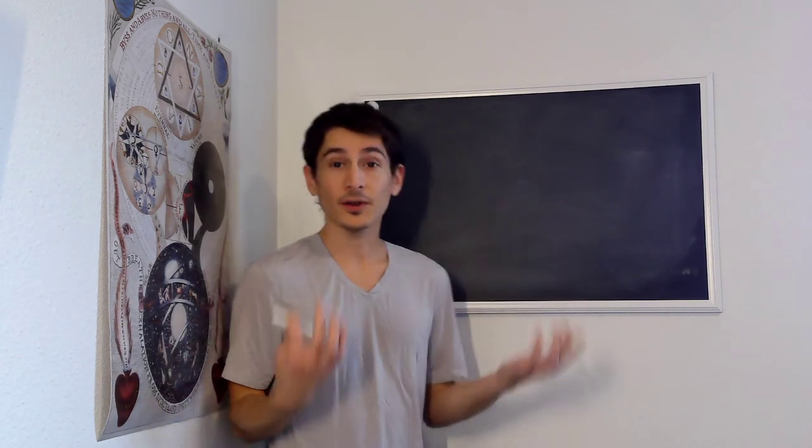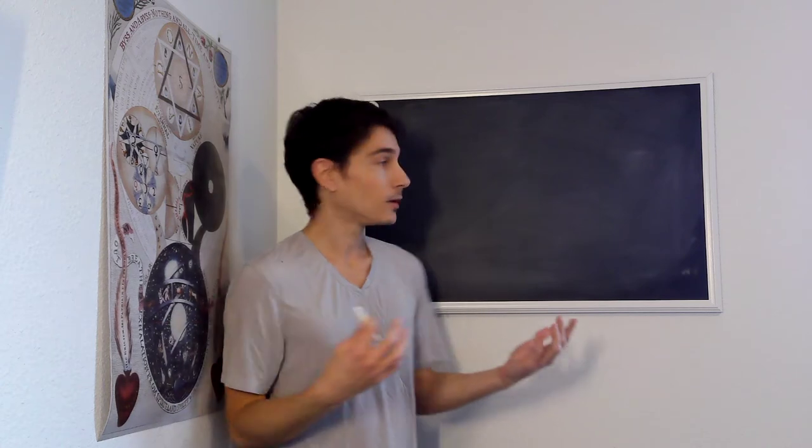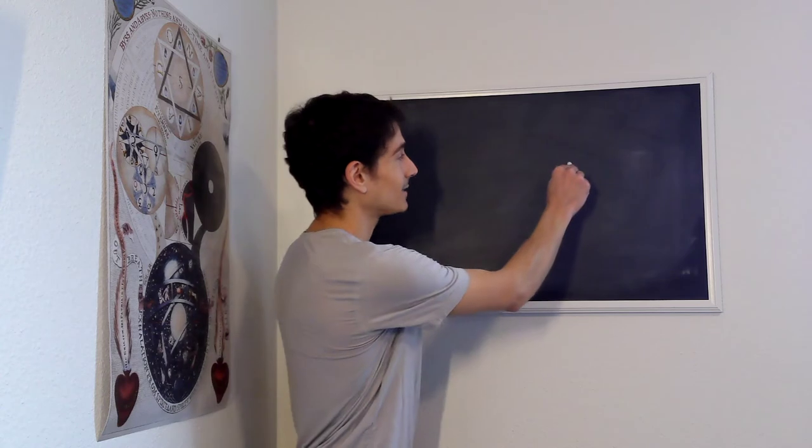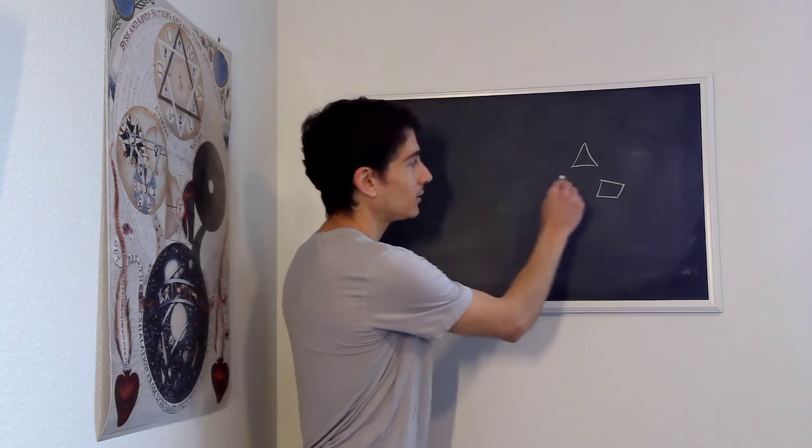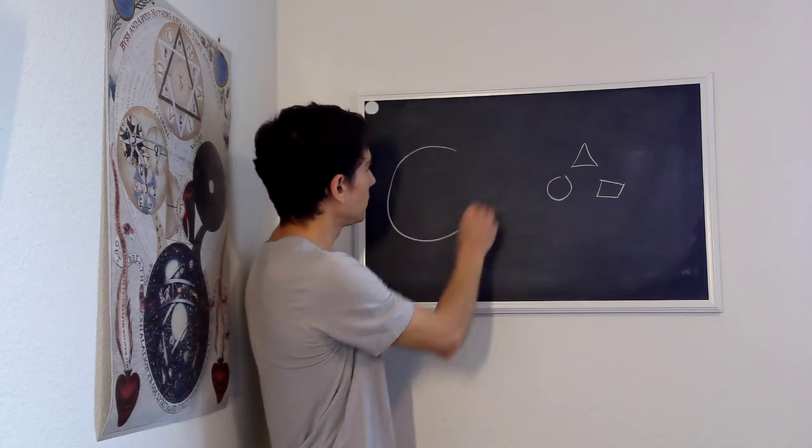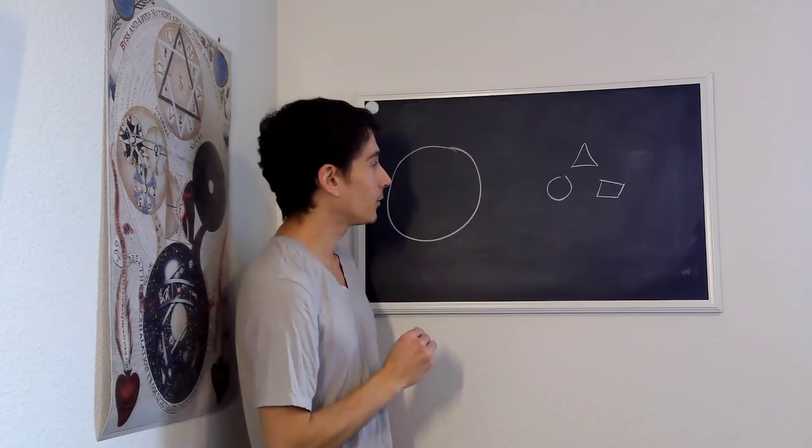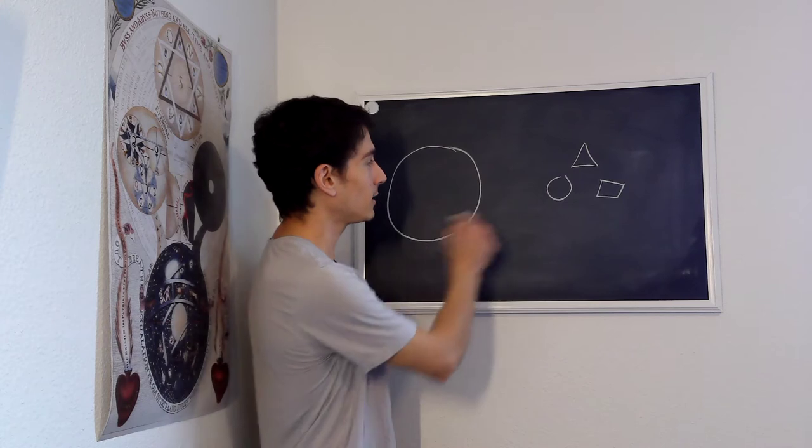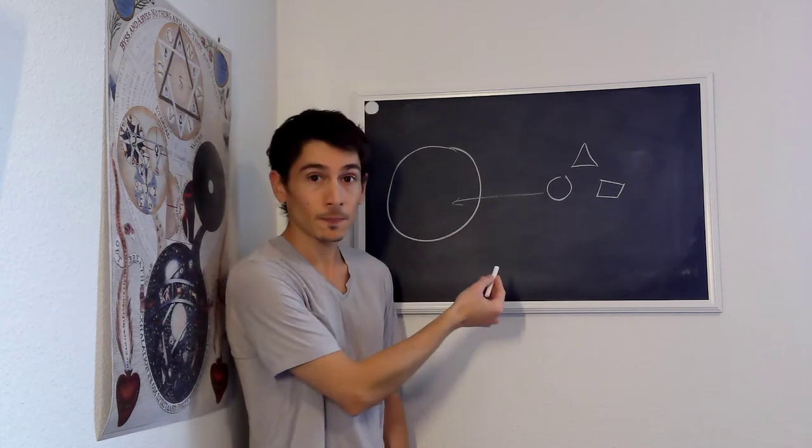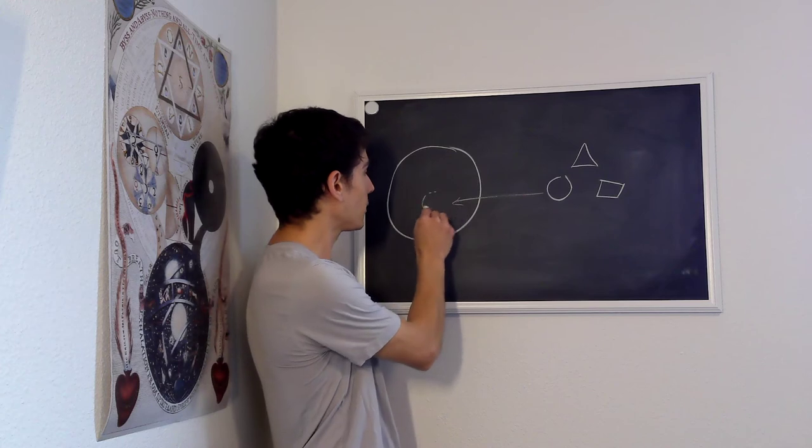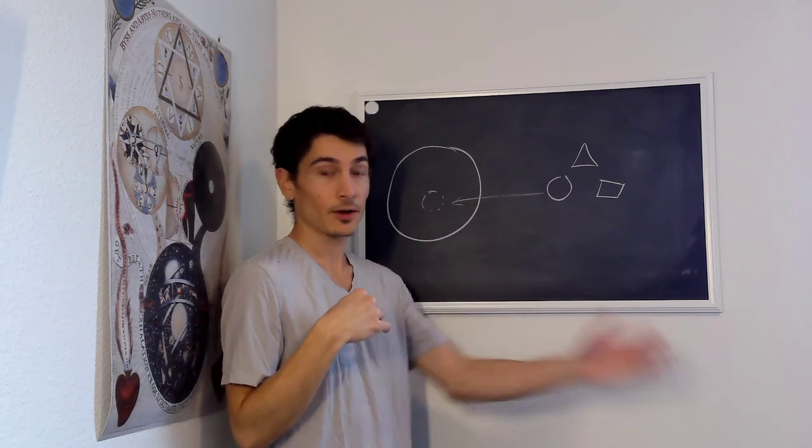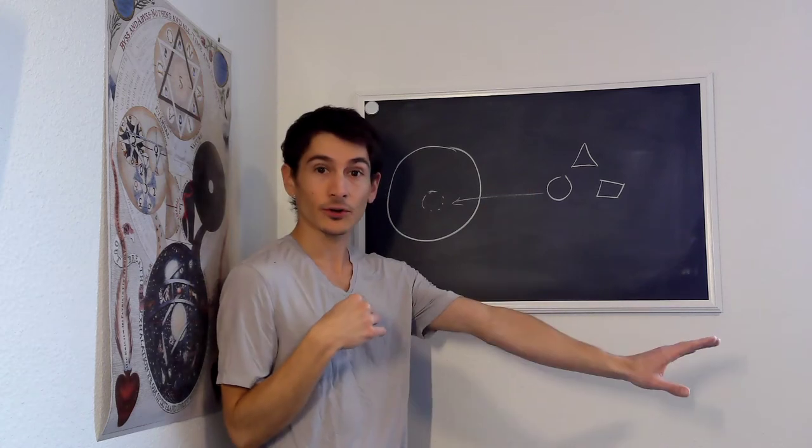For the empiricists like Locke or Hume, there's nothing in the mind that was not first in the senses. So we start with sensory objects out here in the world, and this will be the mind over here. For the empiricists, the idea is we have a sensory impression of the circle, and the idea in our mind of the circle is a kind of faded impression of the physical or sensory object out there.